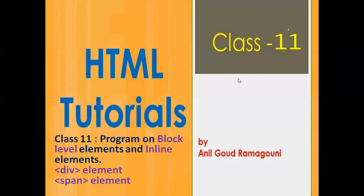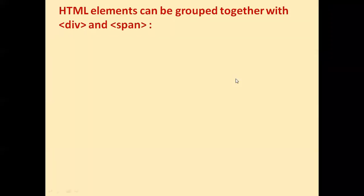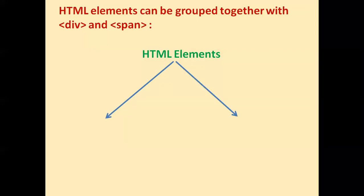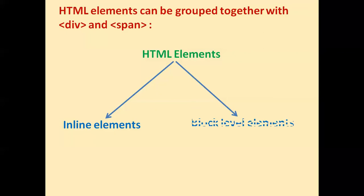HTML elements can be grouped together with div and span elements, and HTML elements are of two types. The first one is inline elements and the second one is block level elements.